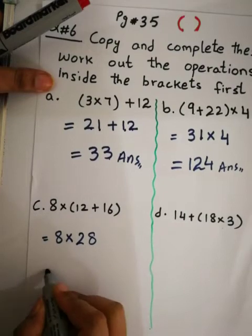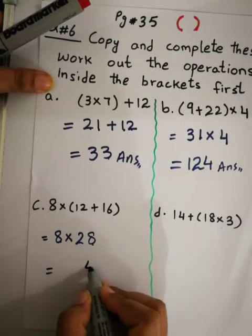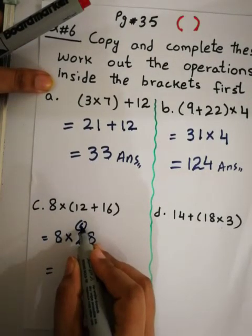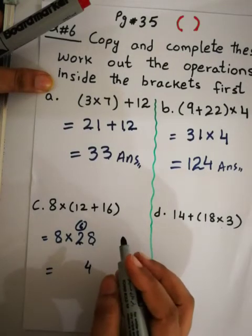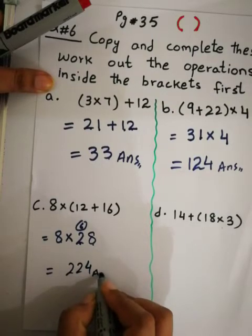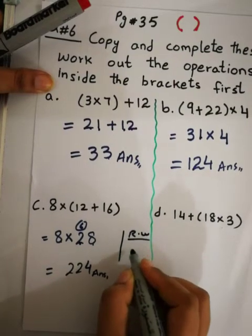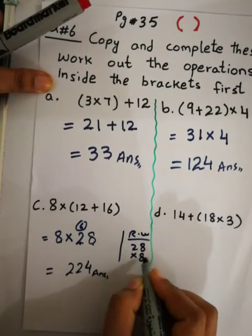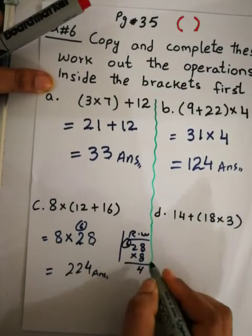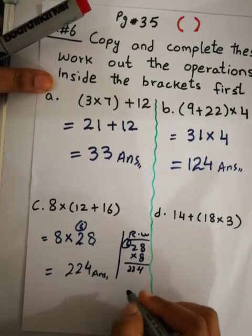Now we multiply 8×28. 8×8=64, write 4 carry 6; 8×2=16 plus 6 = 22. So 8×28 = 224. That is the answer. If you cannot do it directly, you can do it in rough work.